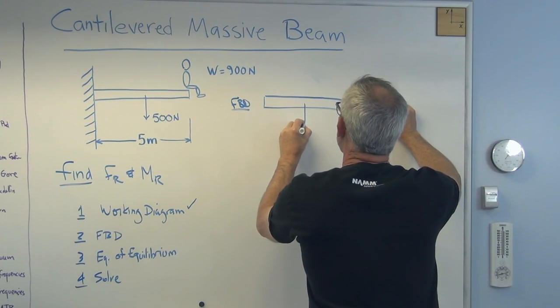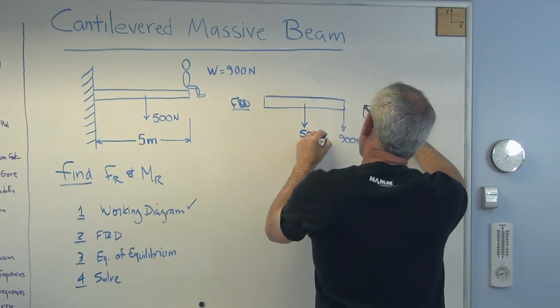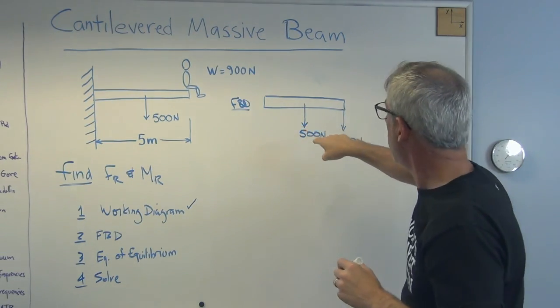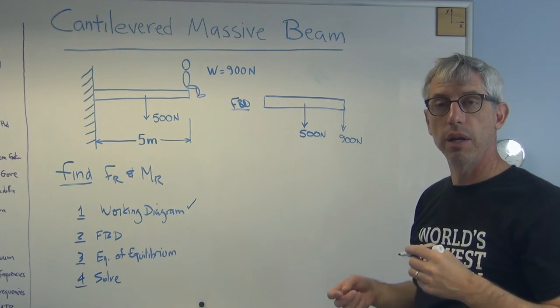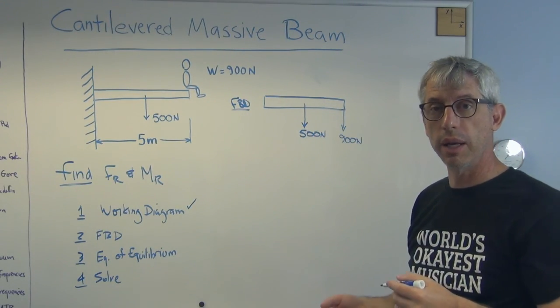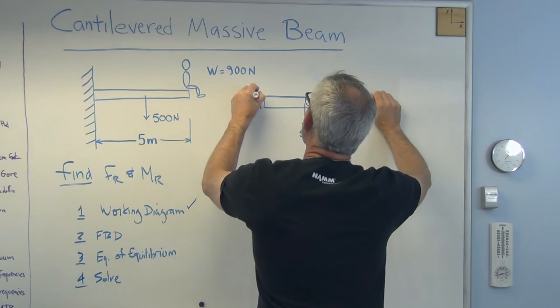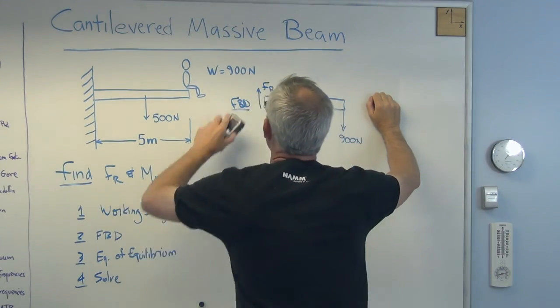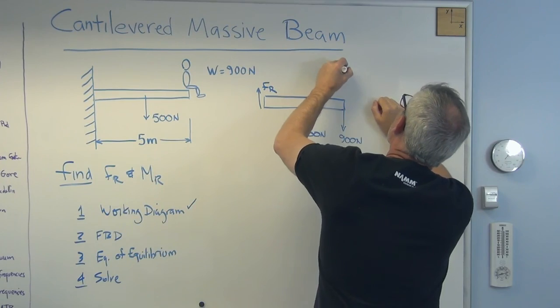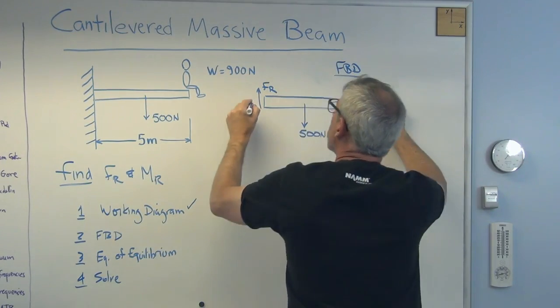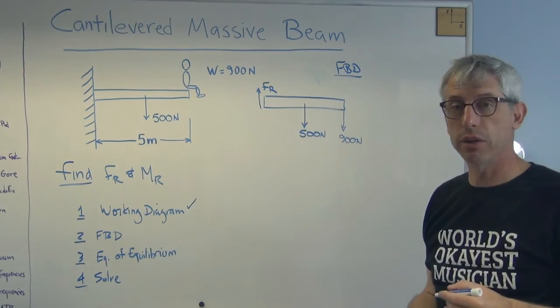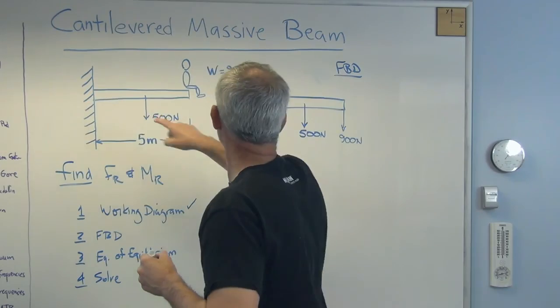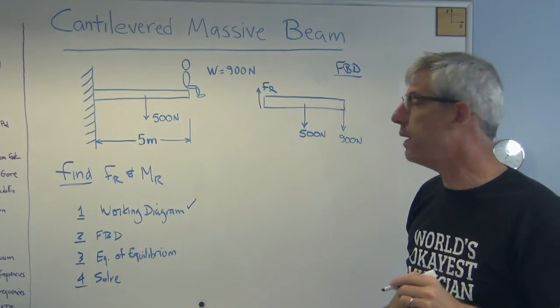In the middle, here's this 500 newtons that is the weight of the beam. Now, if this is going to be in static equilibrium, two things have to happen. There has to be a counteracting force and a counteracting moment. So there's the counteracting force, the reaction force. That's the force that this block of concrete or whatever it is has to apply to the beam to keep it static.